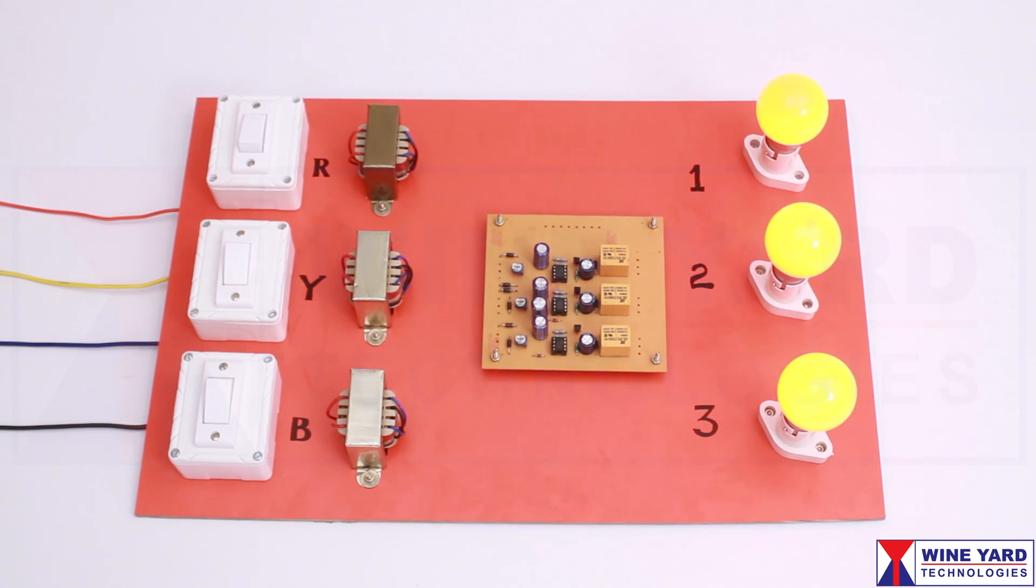Now I am tripping this Y phase also. You can see now all the loads are powered by B phase as the first two phases are off.